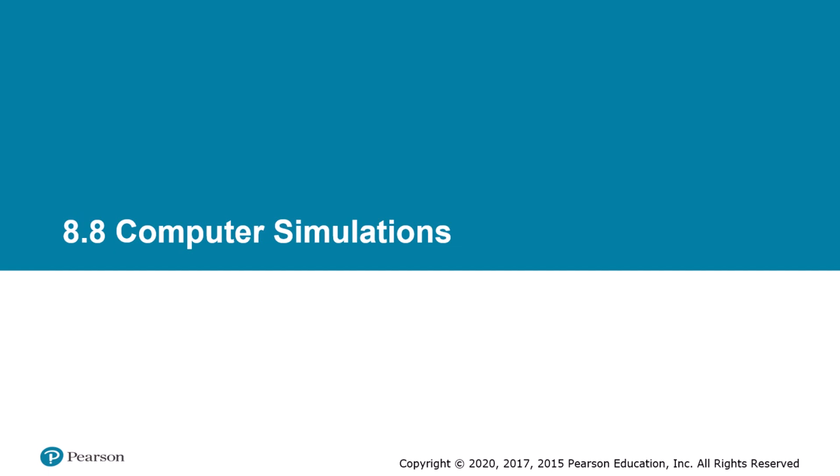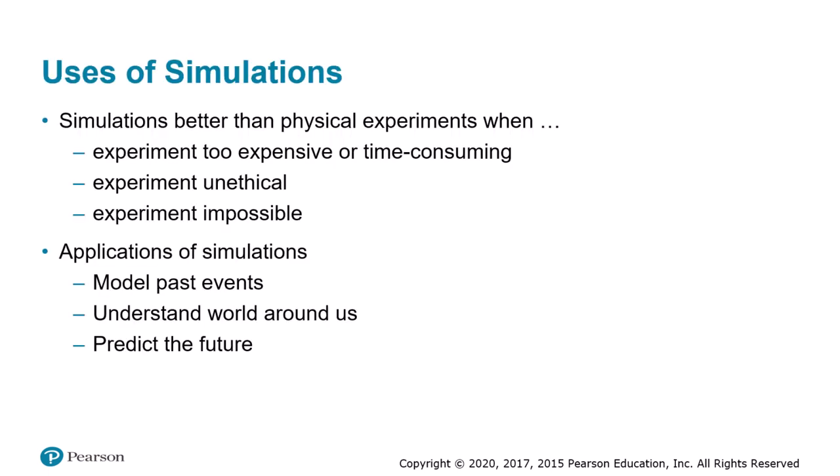Even systems kept behind the locked doors of a computer room can cause harm. Errors in computer simulations can result in poorly designed products, mediocre science, and bad policy decisions. In this section we're going to review our growing reliance on computer simulations for designing products, understanding our world, and predicting the future, and describe ways in which computer modelers validate their simulations.